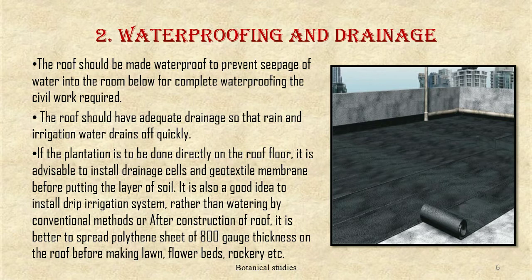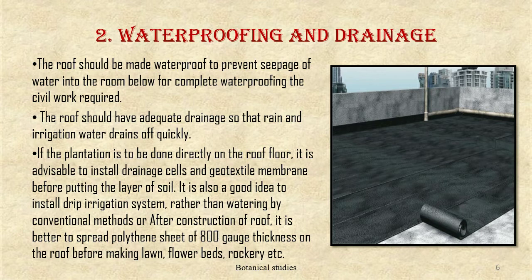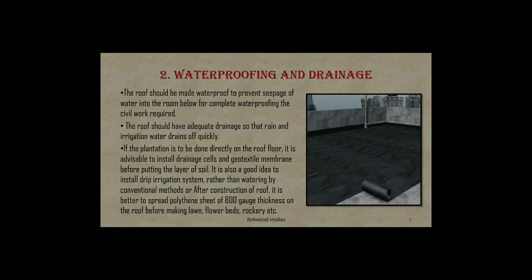Second, waterproofing and drainage — the roof for a garden should be very strong and waterproof to prevent seepage of water into the room below. For complete waterproofing, civil work is required. The roof should have adequate drainage so that rain and irrigation water drains off quickly. If plantation is done directly on the roof floor, it is advisable to install drainage cells and a geotextile membrane before putting the layer of soil. It is also a good idea to install a drip irrigation system rather than watering by conventional methods, or spread a polythene sheet of 800-gauge thickness on the roof before making lawns, flower beds, and rockeries.